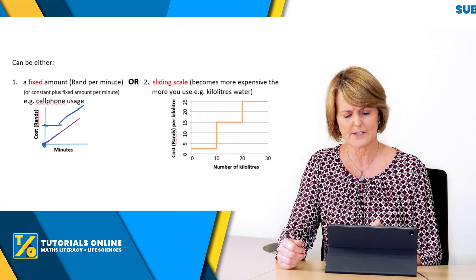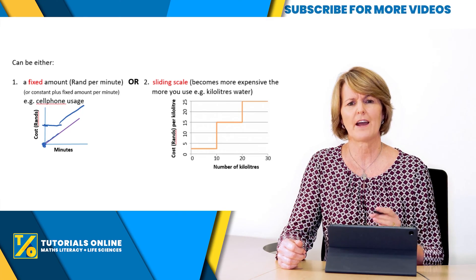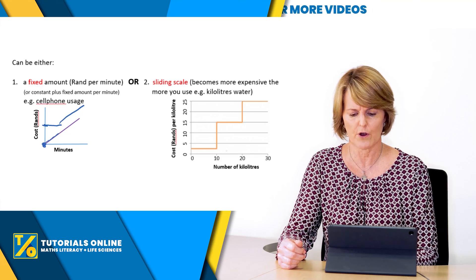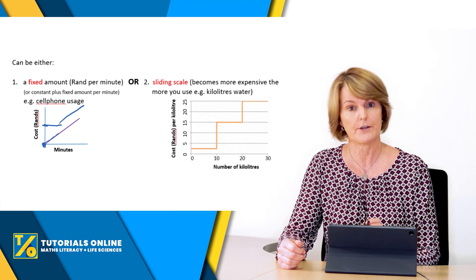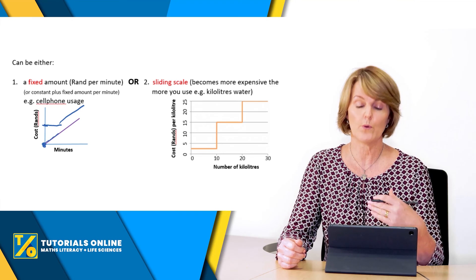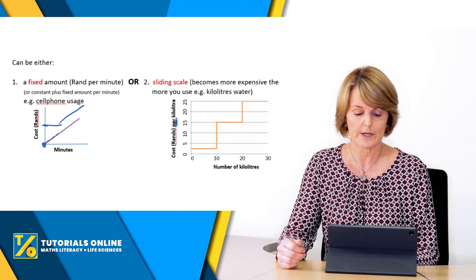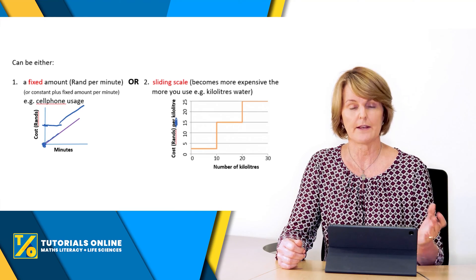Let's look on the right hand side here. You can also have a sliding scale and it's a kind of step graph. You can see it goes horizontal and then it jumps up and then it's horizontal again.